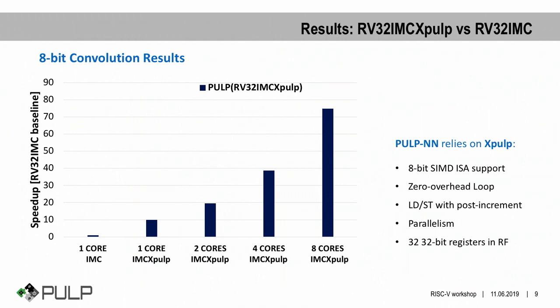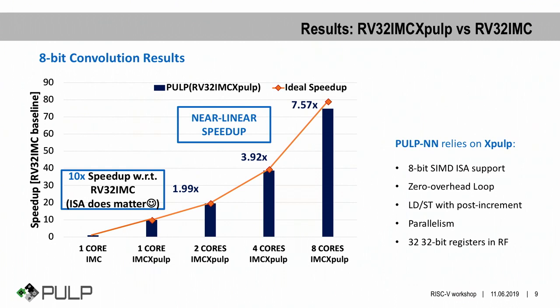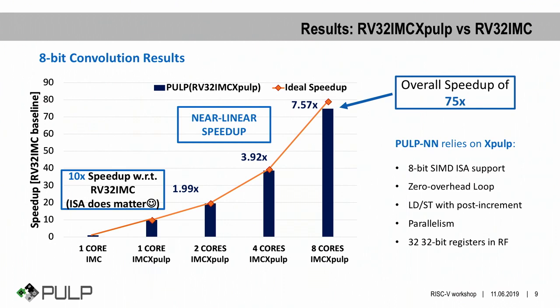For overall convolution results, we compared our optimized kernel with the corresponding IMC implementation in terms of clock cycles. By only exploiting the XPULP extension, we achieve a speedup of 10 times. Then moving from 1 core to 8 cores — full exploitation of the cluster — we achieve near-linear speedup thanks to parallelism. This leads to an overall speedup of 75 times with respect to the IMC implementation.